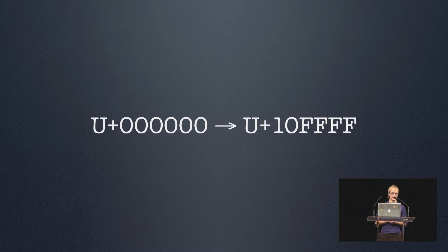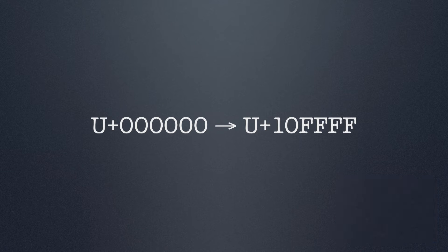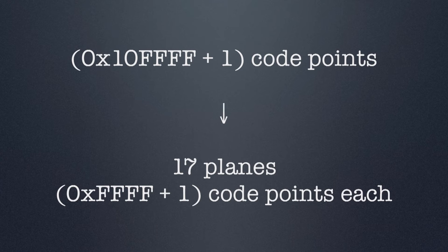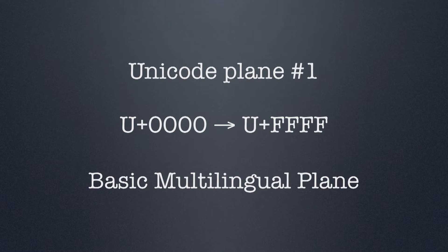Luckily, there's a bit of categorization in Unicode — they group some of these code points together so that it's easier to find different areas. These 1.1 million code points are divided up into 17 different planes. Each of these planes contains about 65,000 different code points. The first plane is probably the most important one, so I'll have a special slide about that plane. It's called the Basic Multilingual Plane, or the BMP, and it contains all the most commonly used symbols.